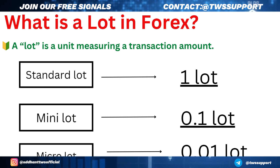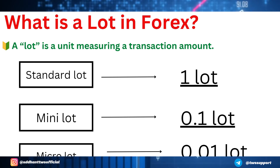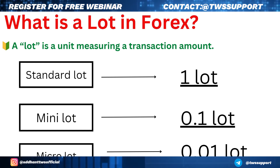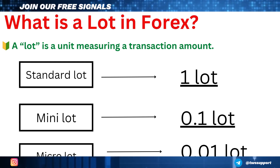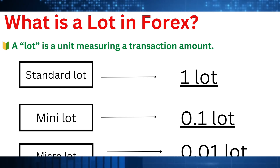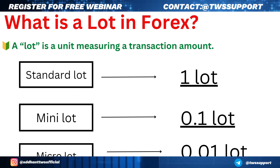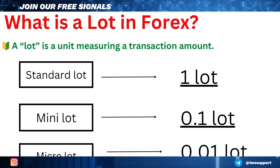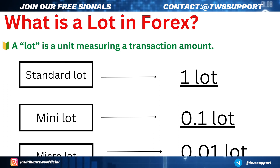In Forex, there are three lot sizes. The first is the standard lot — if you get a 10 pip movement, you get $100 profit. The second is 0.1 lot, which is the mini lot — if you get a 10 pip movement, you get $10 profit. The third is the micro lot, which is 0.01 lot — if you get a 10 pip movement, you get $1 profit.